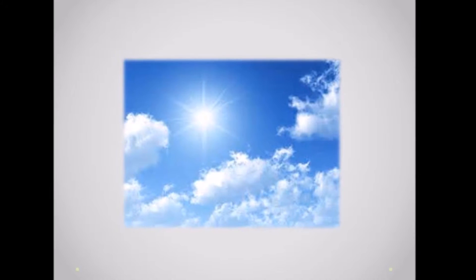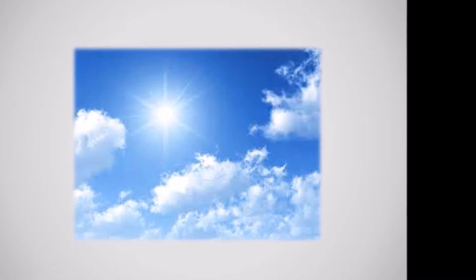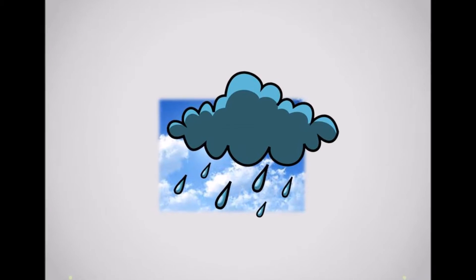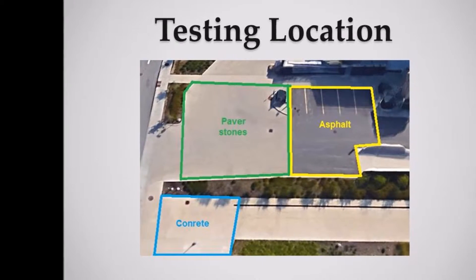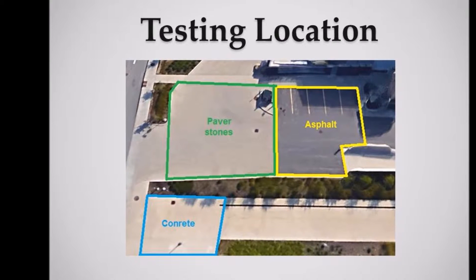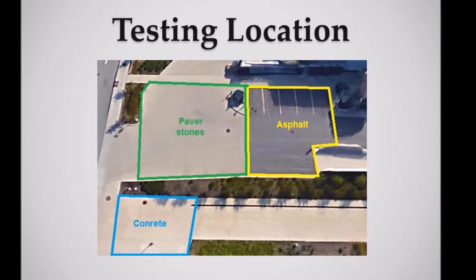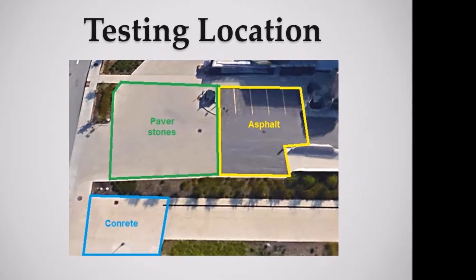Testing days are chosen based on the weather conditions for the week, preferably sunny days with little cloud. Testing cannot be performed on days with rain. All tests take place on the Conklin College campus, outside the northern exit of the HCCE building.